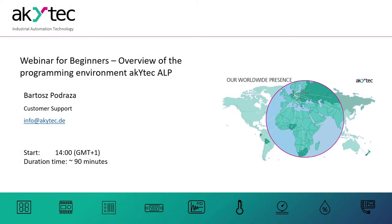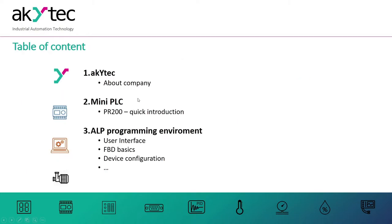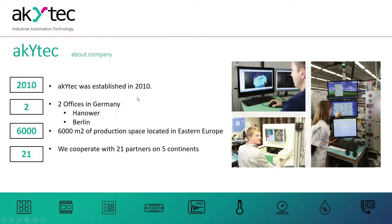Hello, my name is Bartosz Podraza. I'd like to welcome everybody to the webinar for beginners — an overview of the programming environment Akitech ALP. The webinar will take around 90 minutes. Akitech was established in 2010; we have two offices in Germany, in Hanover and Berlin. Our production space is located in Eastern Europe and we cooperate with 21 partners around the world.